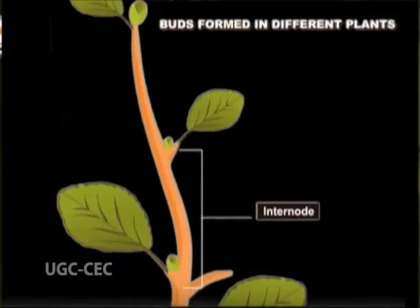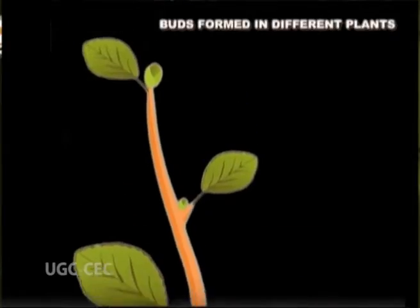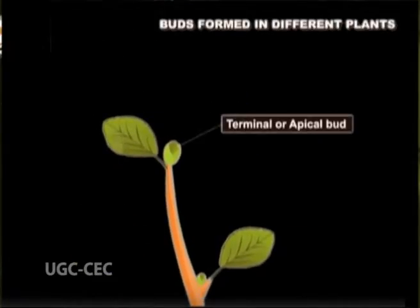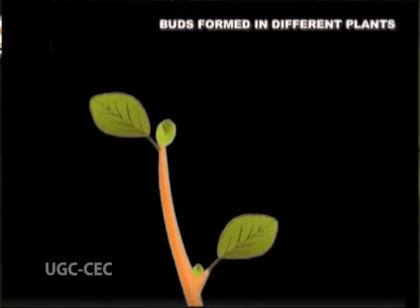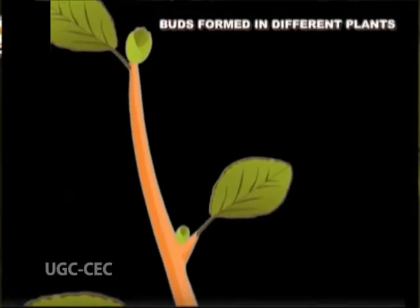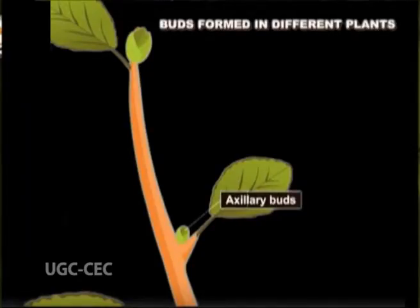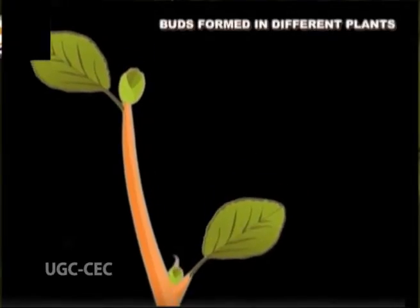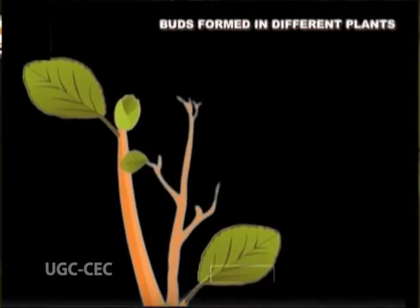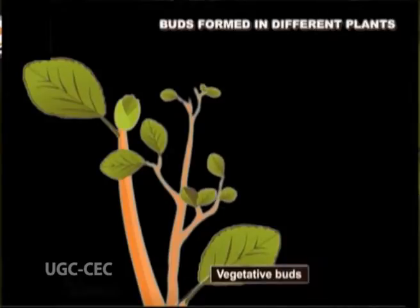The shoot bears vegetative buds, which may be terminal in position and called apical buds, and are responsible for the plant growing upwards. Other vegetative buds are axillary buds found in the axils of leaves, which give rise to lateral branches. It also bears floral buds, terminal or axillary in position, that grow into flowers.